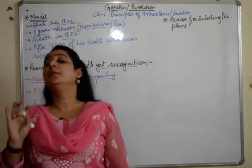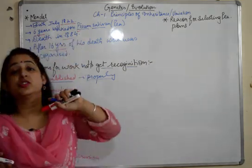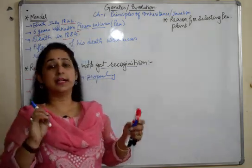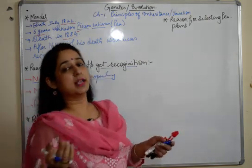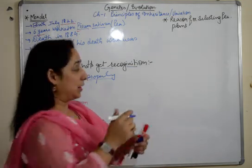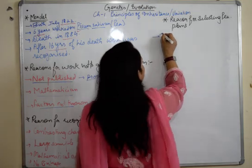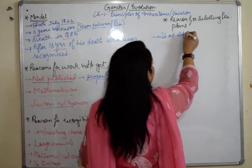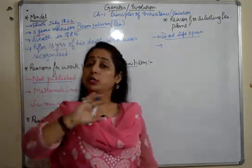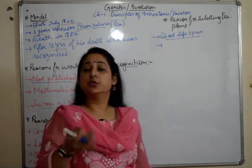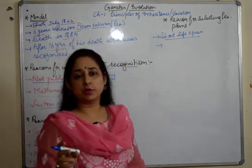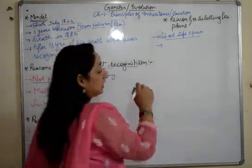Next, the reasons for selecting the pea plant — also known as Pisum sativum, which you must remember as it is commonly asked in exams. The first reason is that pea plants have a short lifespan. Because of this, he could study multiple generations throughout his lifetime and observe parents, their offspring, and further generations all within one course of time.